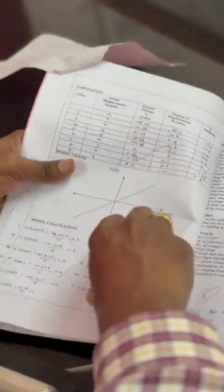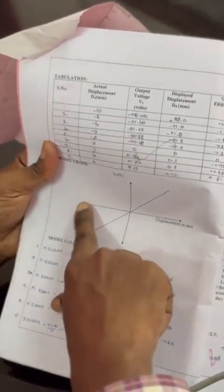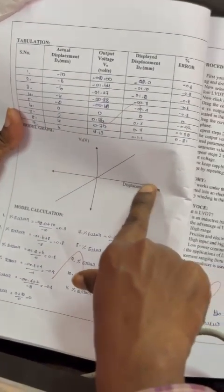We have to draw a graph by taking displacement on the x-axis and the output voltage on the y-axis.